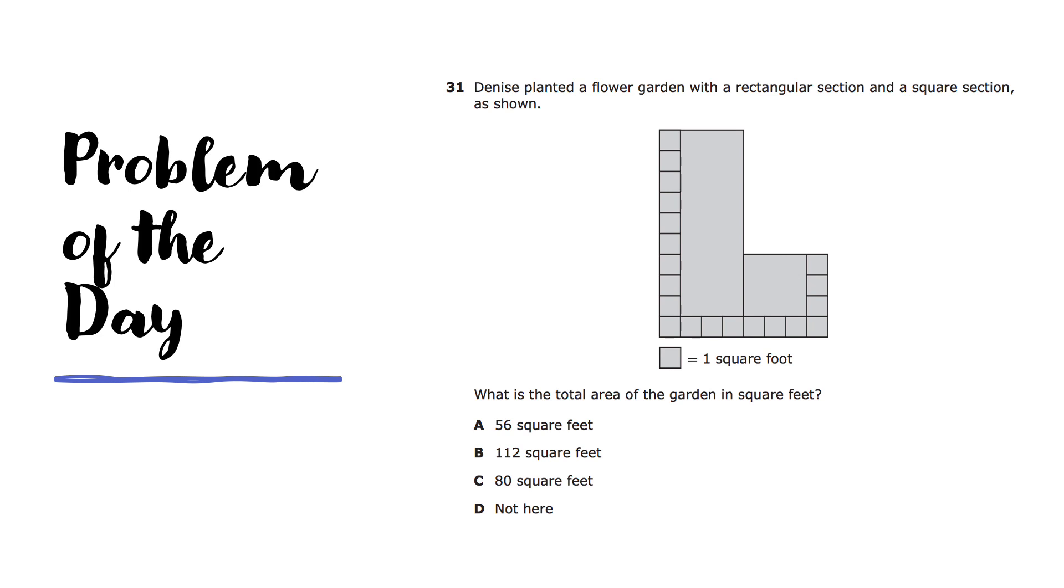All right. If you're ready for the last question of problem of the day, let's go ahead and start question three. Dennis planted a flower garden with a rectangular section and a square section as shown. What is the total area of the garden in square feet? A, 56 square feet. B, 112 square feet. C, 80 square feet. Or D, not here.